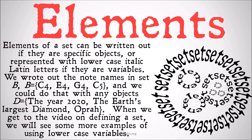Elements of a set can be written out if they're specific objects, or represented with lowercase italic Latin letters if they're variables. We wrote out the note names in set B — so B equals C4, E4, G4, and C5 — and we could do that with any objects. We could have set D, which is the set of the year 2020, the Earth's largest diamond, and Oprah. When we get to the video on defining a set, we'll see some other examples of how to use lowercase set variables. Remember, the sets and classes are always going to be in italics to help distinguish them from other variables that we might see in propositional logic.